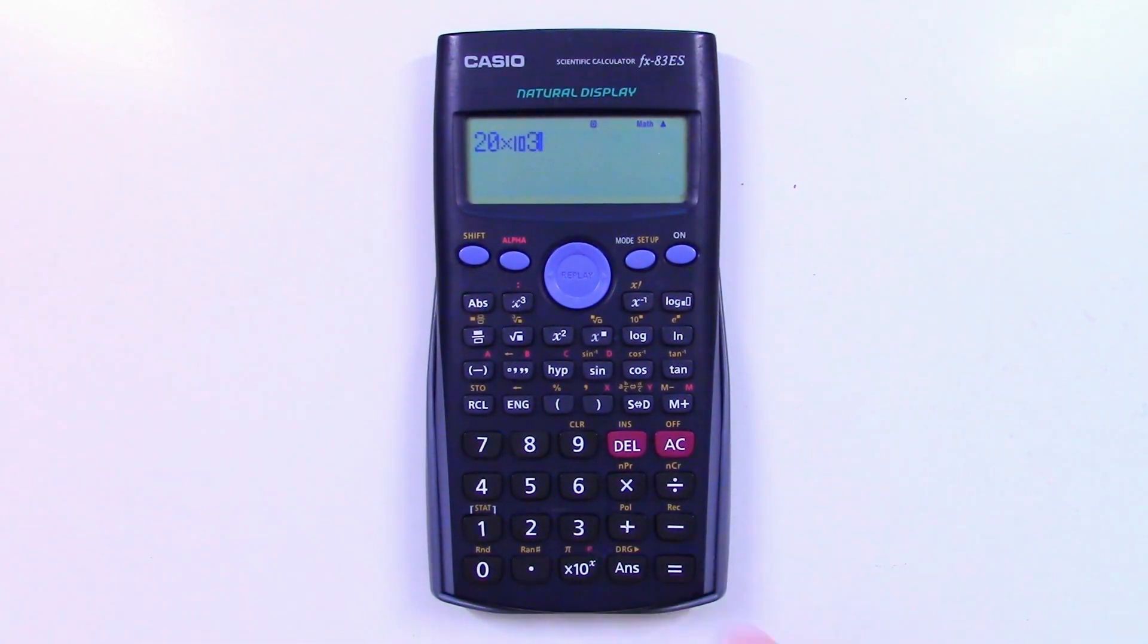If I hit the equals button, you can see it converts this for us automatically. It even protects us from common mistakes. So if I type 20 times 10 to the 3 times 2, watch what happens. The calculator is smart enough to know to multiply the whole number by 2, instead of multiplying the power by 2. All the same, if I were you, I'd pop some brackets around the term just for my own peace of mind.